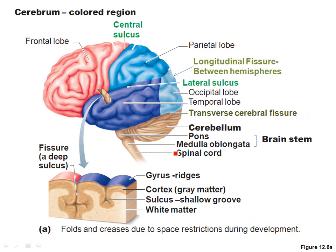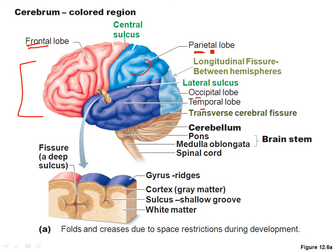Now we're going to talk about some specific anatomy of the brain. If you've already covered the bones, some of these words are going to look really familiar. Looking at the cerebrum — this main big part of the brain — it has four lobes: a frontal lobe, just like the frontal bone of the skull; a parietal lobe, just like the parietal bone of the skull; an occipital lobe; and a temporal lobe.